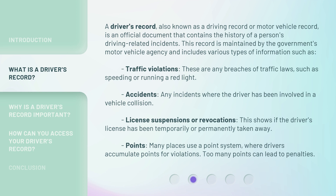This record is maintained by the government's Motor Vehicle Agency and includes various types of information such as: Traffic violations — any breaches of traffic laws, such as speeding or running a red light. Accidents — any incidents where the driver has been involved in a vehicle collision. License suspensions or revocations — this shows if the driver's license has been temporarily or permanently taken away. Points — many places use a point system where drivers accumulate points for violations, and too many points can lead to penalties.